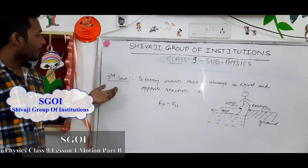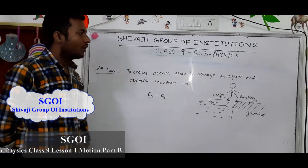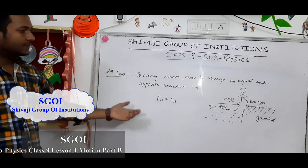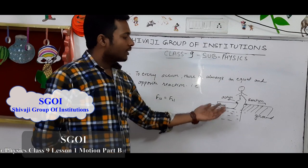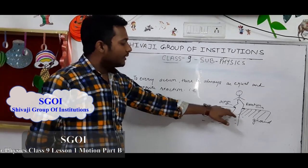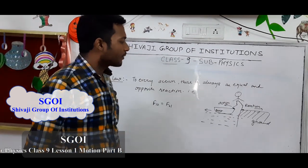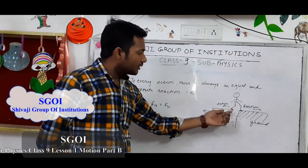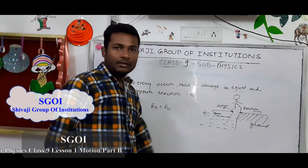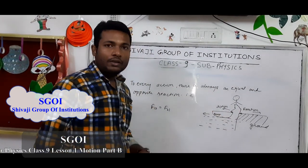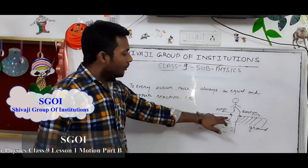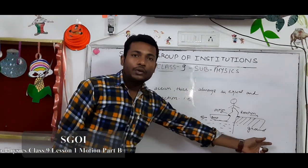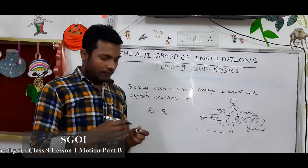Let's see the third law of Newton. According to the third law, to every action there is always an equal and opposite reaction, that is F12 equals F21. For example, here is a boy coming from a boat to the ground. One leg is on the boat and the other is on the ground. He pushes the boat with his leg to move to the ground. The action is on the boat and the reaction is on the boy — the boat moves away from the ground and the boy moves to the ground. This is the third law of motion.